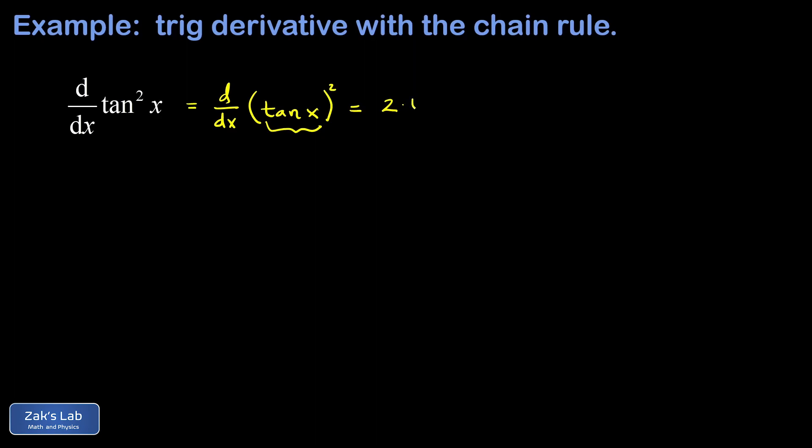That gives us twice that variable, twice tangent X. Now the chain rule says we have to multiply by the derivative of tangent X, and that's secant squared X. And we're done.